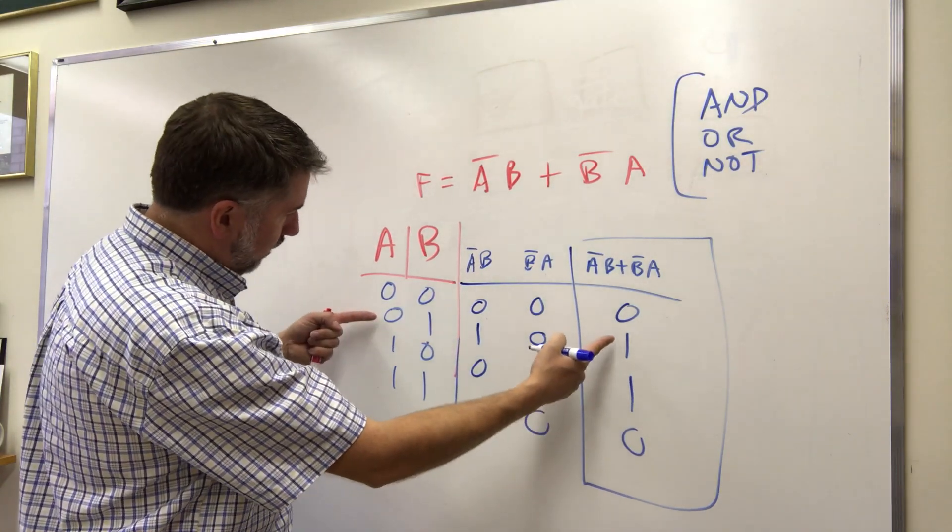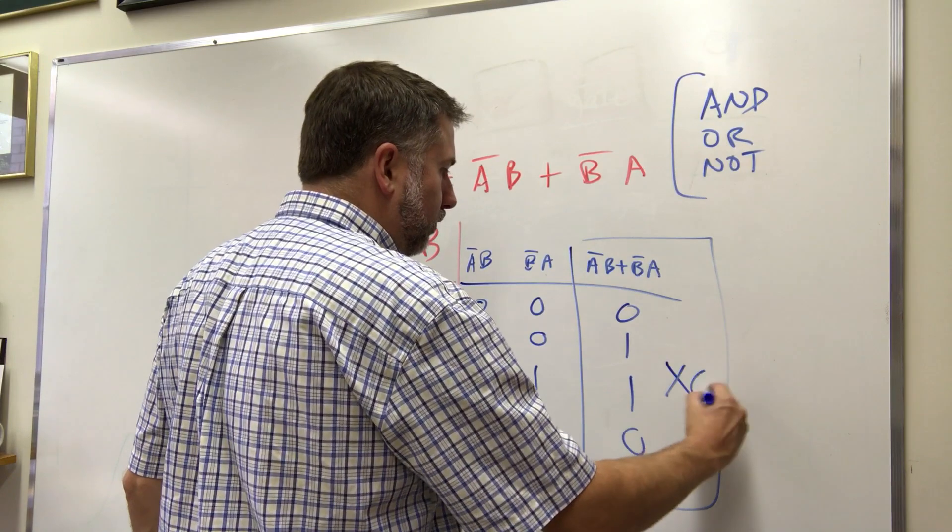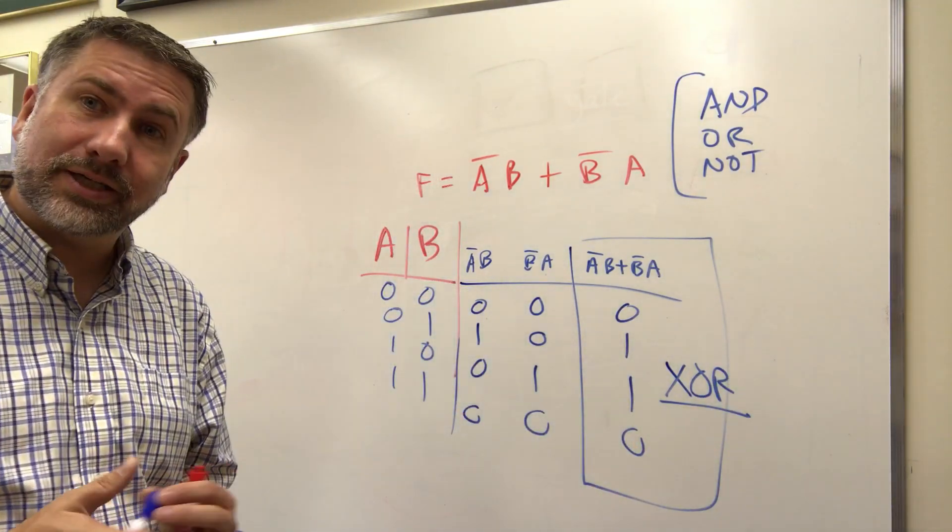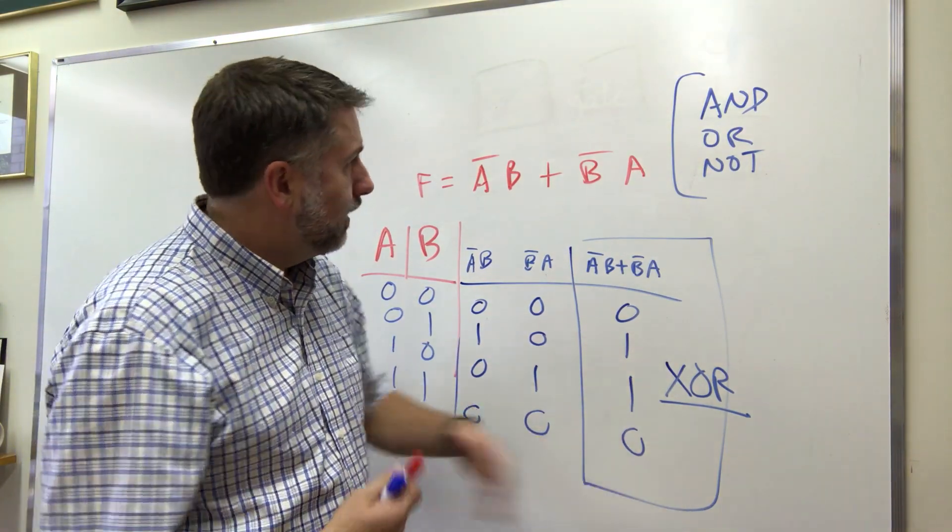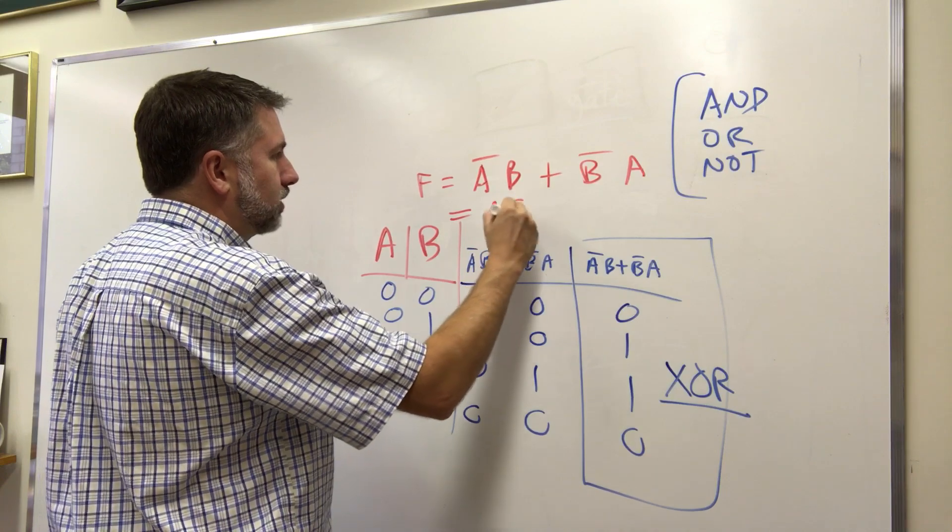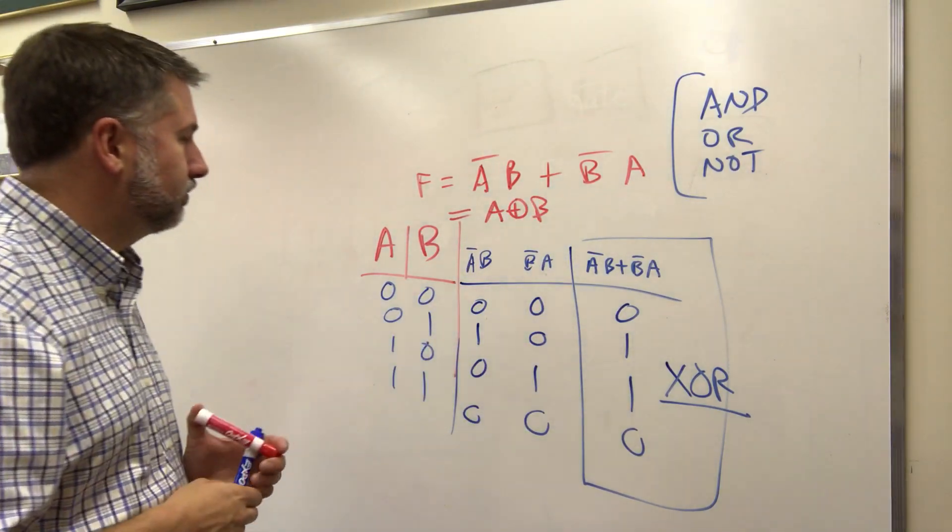Well if you look back on that video you watch that again what you see is that if you have one or the other right either B or A but not both this is exclusive or. And the more you work with these the more you'll be able to recognize this kind of stuff as you go. So this function F is also equal to A exclusive or B.